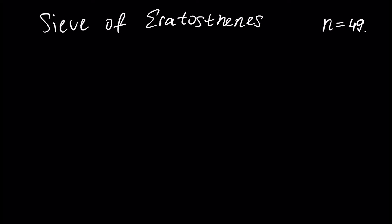This algorithm is called after Greek mathematician Eratosthenes, who lived two thousand two hundred years ago. To implement this algorithm, we first have to write down all the numbers up to our given number, 49. Let's do it.